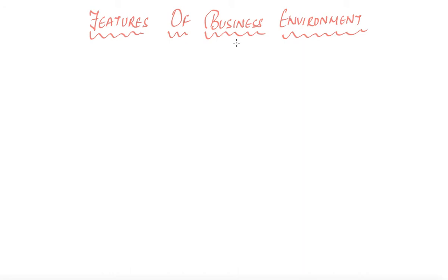Revising again the definition of business environment which we have discussed in the previous class. By business environment, we mean the sum total of all the individuals, institutions or other forces that are outside the control of business but still affect the performance of business. As we discussed before, the features of something are within their definition. Same with the business environment — if we talk about the features of business environment by the definition, you can estimate its features.